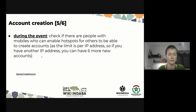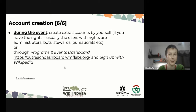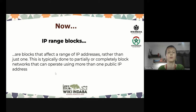During the event itself, because things happen — new people may read the announcement and decide to come, while people who registered may be unable to attend. Check if there are people with mobile phones who can enable hotspots for others to create accounts. You can also create extra accounts by yourself if you have the rights, such as administrators, stewards, bureaucrats, or through the Programs and Events Dashboard. I'm also going to talk about IP range blocks — blocks that affect a range of IP addresses rather than just one. In Ukraine, we have an issue with IP range blocks affecting editing for mobile companies.